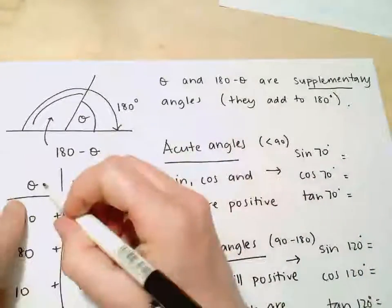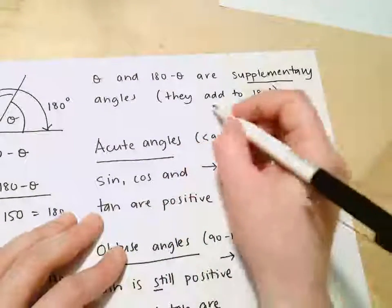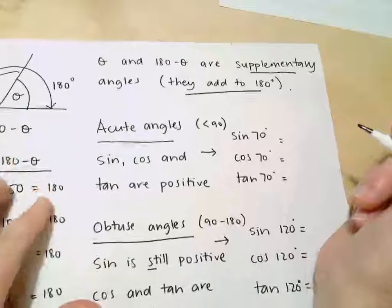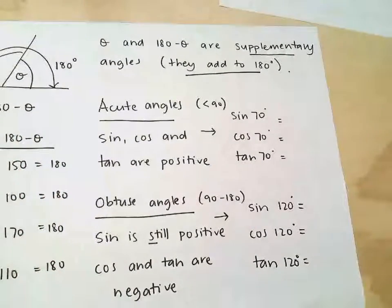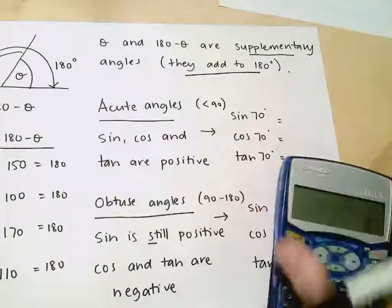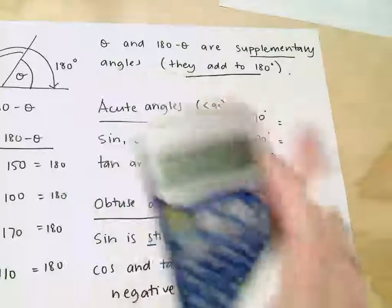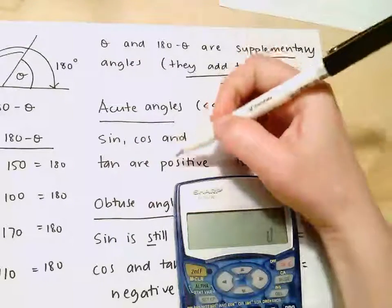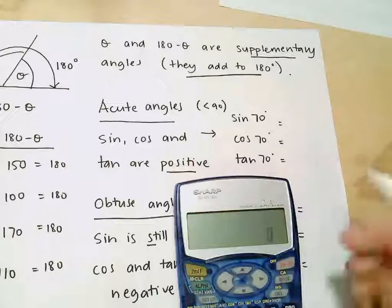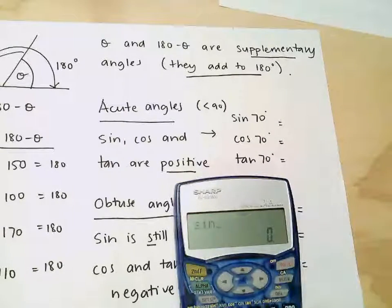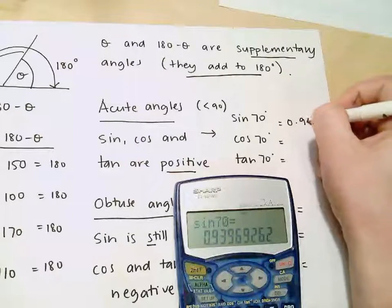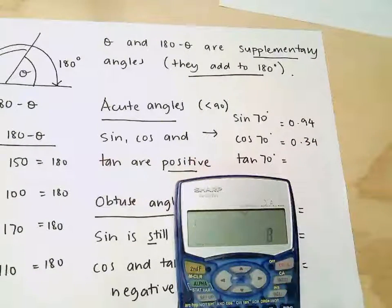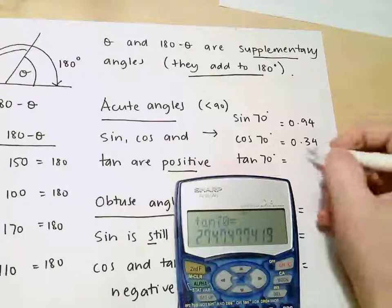We call those angles theta and 180 minus theta supplementary angles, because they add up to 180. Now let's have a look at our sine, cos, and tan ratios for acute angles and for obtuse angles. What we find is that for acute angles — angles less than 90 — when we evaluate sine, cos, and tan, we only get positive values. For example, 70 is an acute angle: sine 70 gives a positive number, cos 70 gives a positive number, tan 70 gives a positive number.